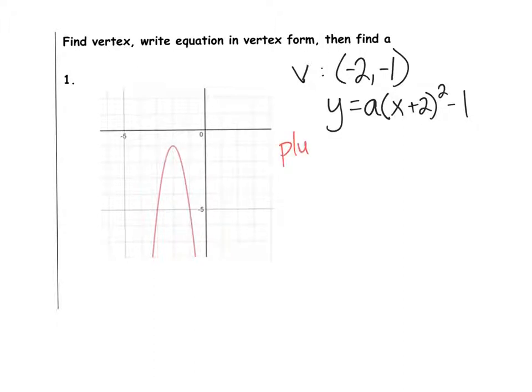I'm going to plug in negative one, negative five for X and Y. So I'm going to put negative five equals A—I don't know A, that's what I'm solving for. So A stays A because that's our goal, to find A. Parentheses. X plus two. Negative one plus two squared minus one.